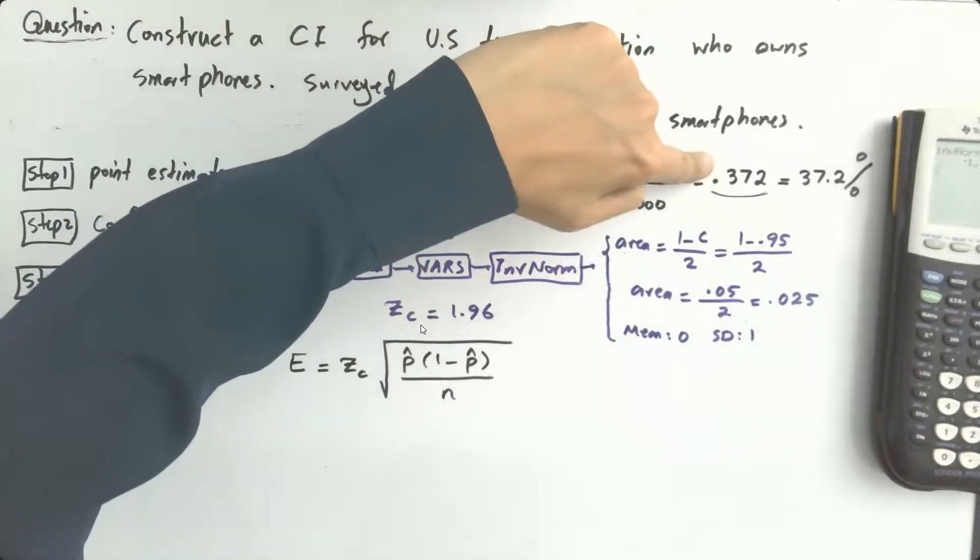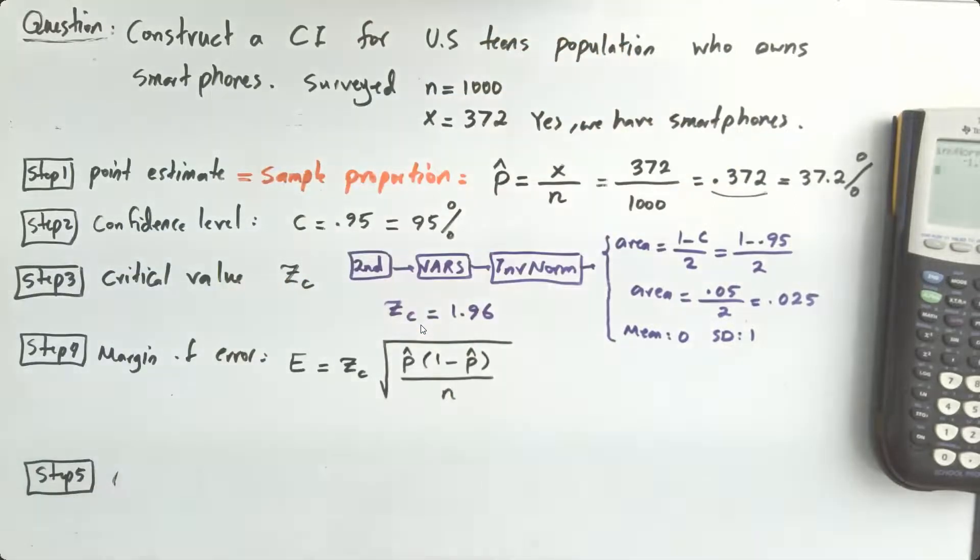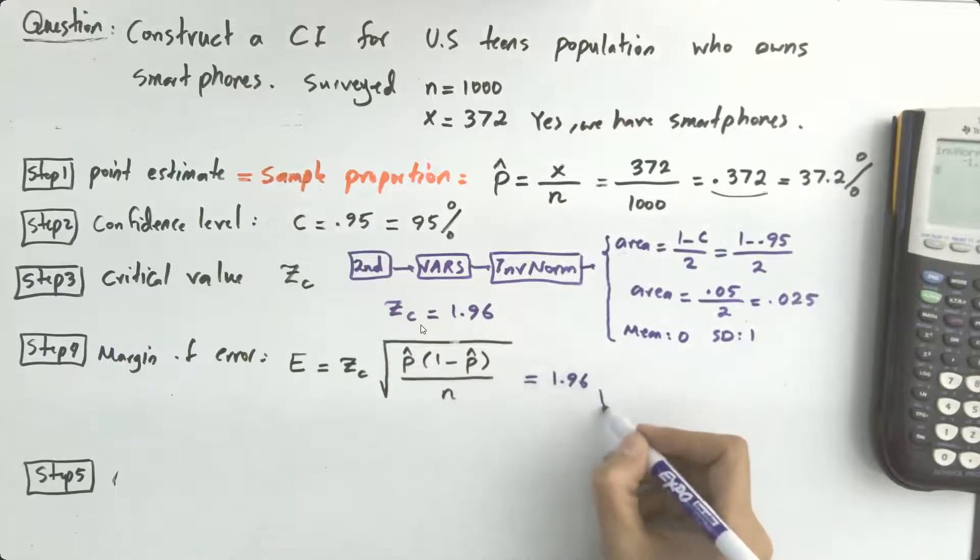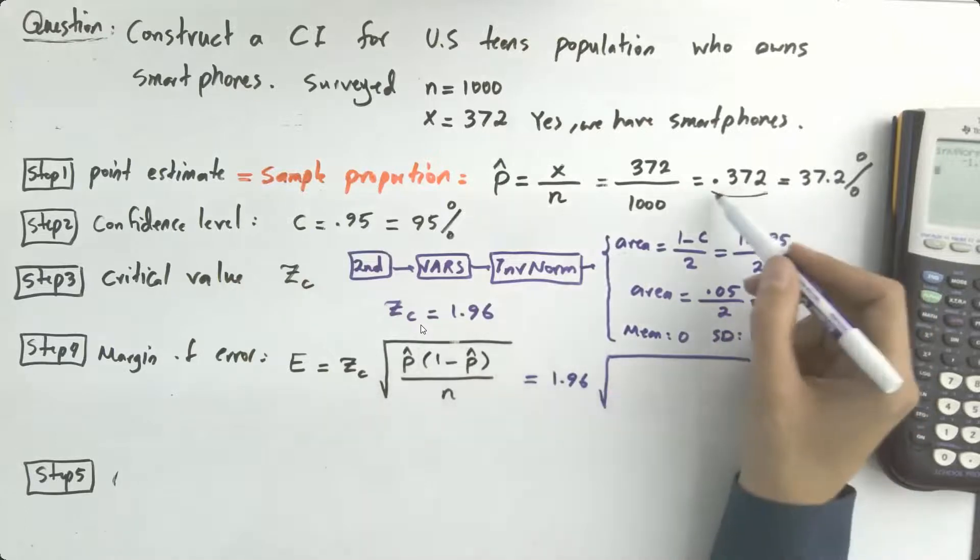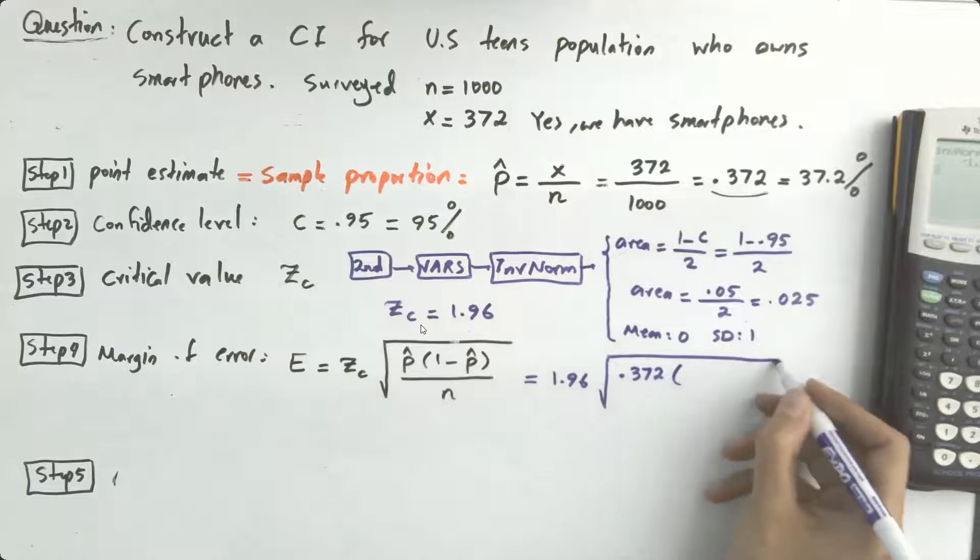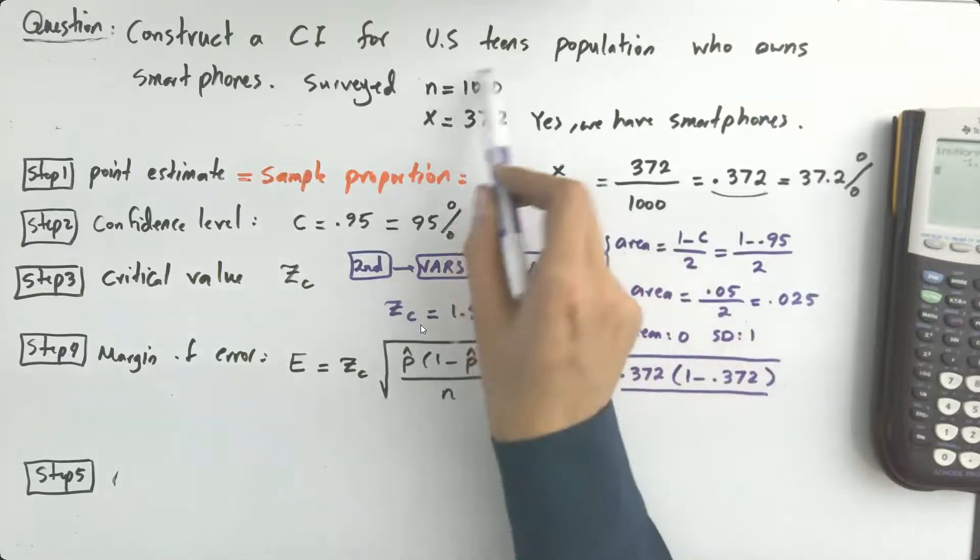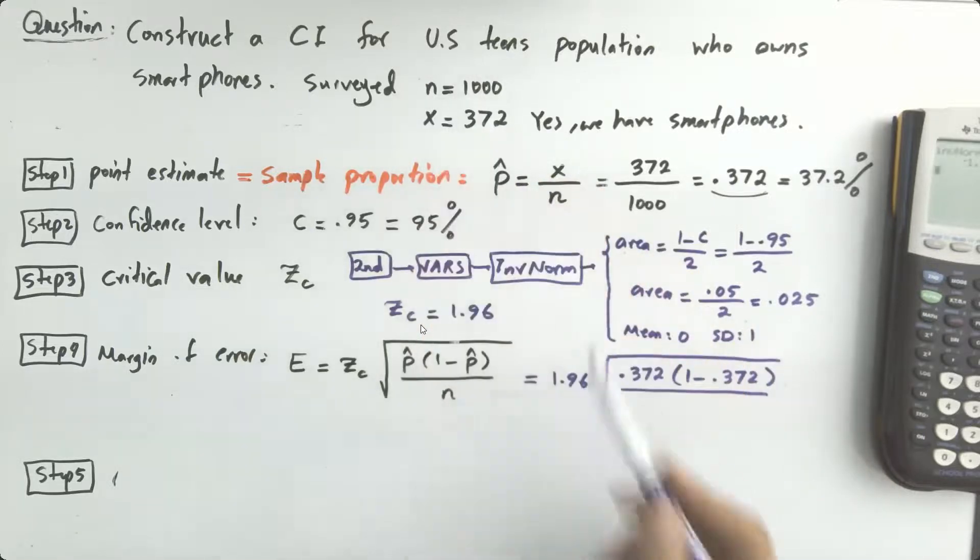Okay, very good. I have all the information that I need. I have my n, a thousand. I have p hat which is 0.372, then I can find 1 minus p hat. z_c I already found it, 1.96. I have everything that I need. Very well, so this one is equal to z_c, 1.96, times square root of